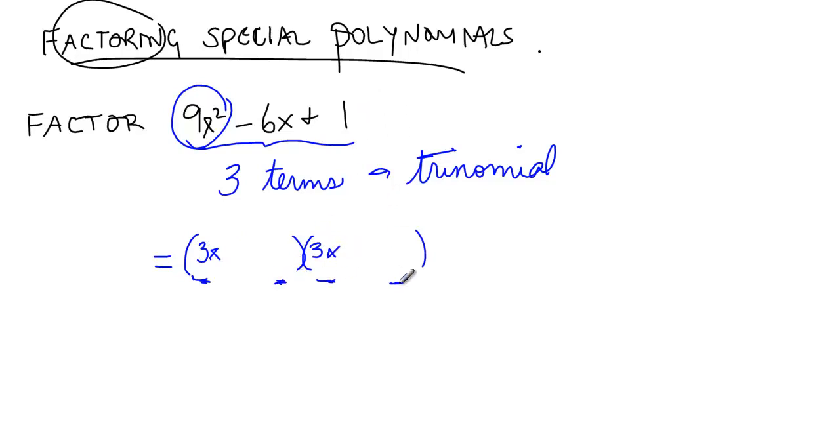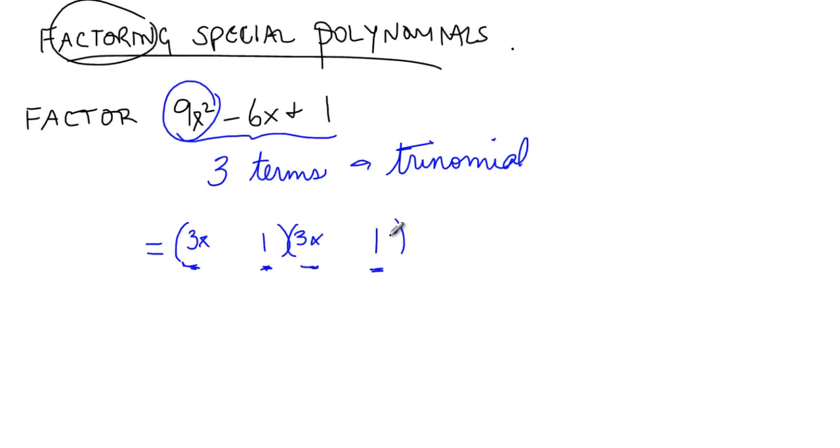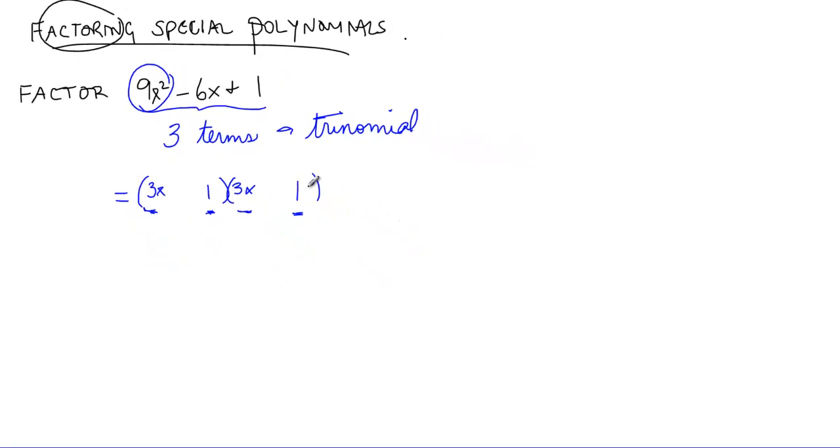The last two things over here have to multiply to give me a 1. The only two numbers multiply to give 1 are 1 and 1. And then we just have to look at the signs. We need the outside and the inside to go together to make negative 6x. We know this times this has to be a positive 1. Playing around with all of that, you should be able to see that these both have to be negatives.